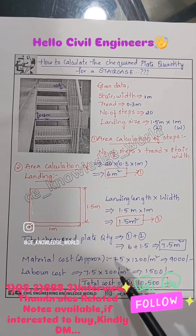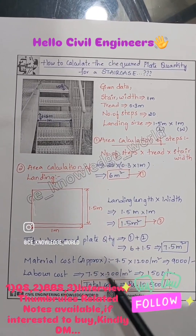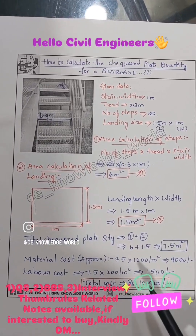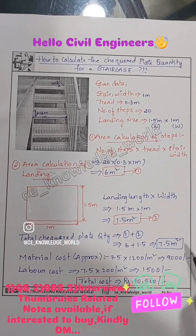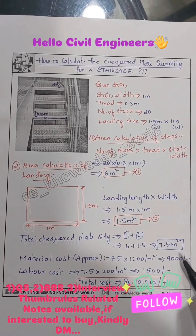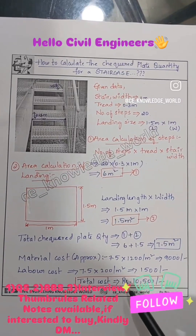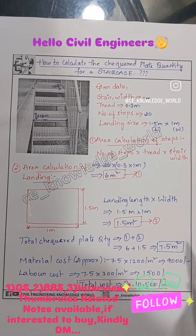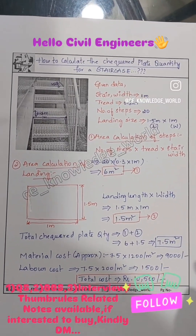The labor cost is considered at 200 rupees per square meter, so 200 × 7.5 = 1500 rupees. Therefore, the total cost is 9000 + 1500 = rupees 10,500.